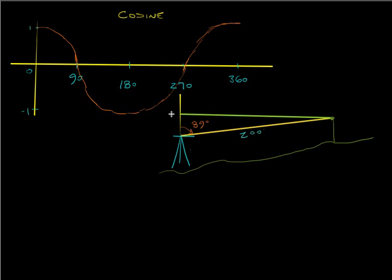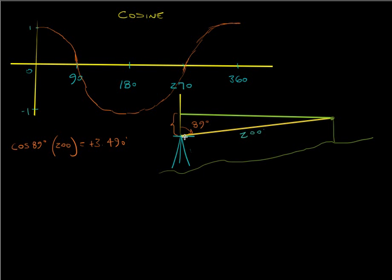If I solve for the vertical distance, I have to use the cosine function. And to get the horizontal distance, the distance along the green line would use the sine function — opposite. So if I take the cosine of 89 degrees and multiply that by 200, I get 3.490 feet. So the prism is 3.490 feet above the focal point of the total station.